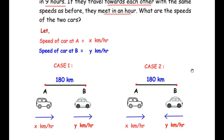In Case 2, the cars are traveling towards each other. The car at place A is moving towards the right and the car at place B is moving towards the left. The speeds are maintained as before — x kilometers per hour for car at A and y kilometers per hour for car at B. Moving towards each other, they meet in 1 hour, whereas going in the same direction they meet in 9 hours.